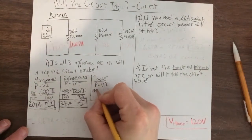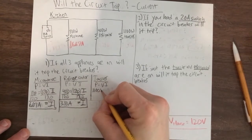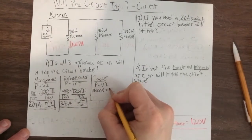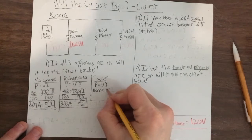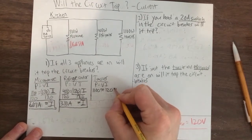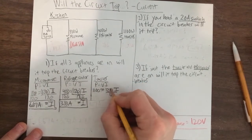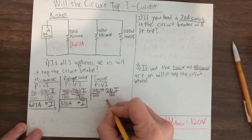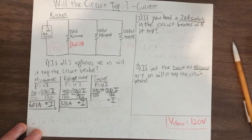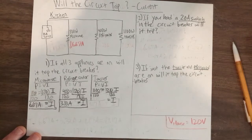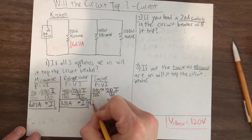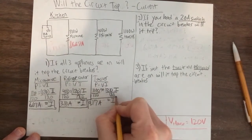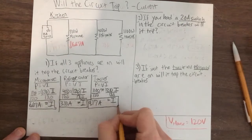Now for the toaster — the big energy user, because it uses so much heat — 1100 watts. So 1100 equals 120 for the voltage. Again, the same number for the voltage because we're in a parallel circuit. Divide both sides by 120; I will be left over on the right side. On the left side, 1100 over 120 gives you a big number for current — rounded to two decimal spots, 9.17 amps for current from the toaster.